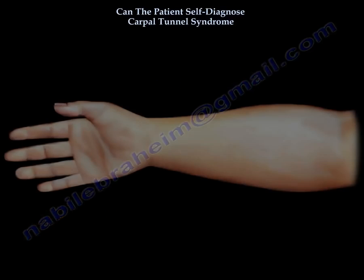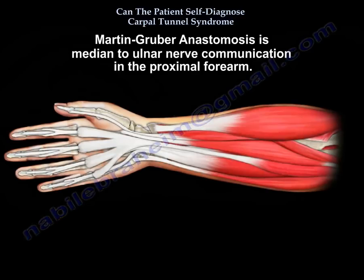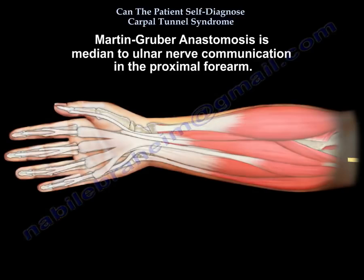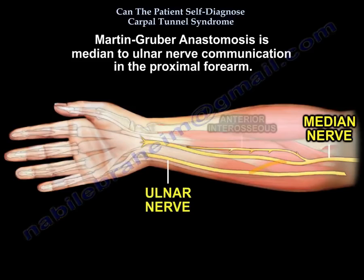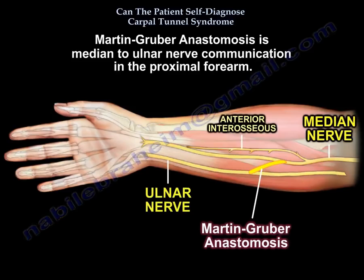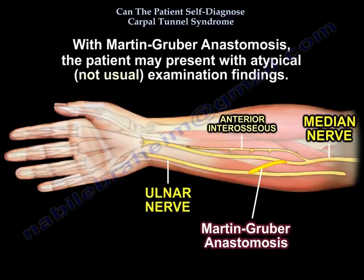Martin-Gruber Anastomosis is a median-to-ulnar nerve communication in the proximal forearm. The patient may present with atypical exam findings.